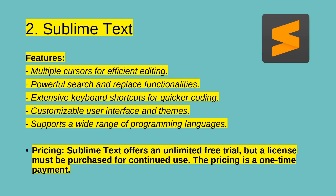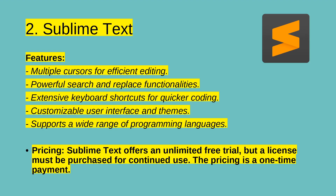Sublime Text is known for its minimalistic design and powerful features, making it a top choice for developers who prefer a distraction-free coding environment. Its features include multiple cursors for efficient editing, powerful search and replace functionalities, extensive keyboard shortcuts for quicker coding, a customizable user interface and themes, and support for a wide range of programming languages. Sublime Text offers an unlimited free trial, but a license must be purchased for continued use — it is a one-time payment.